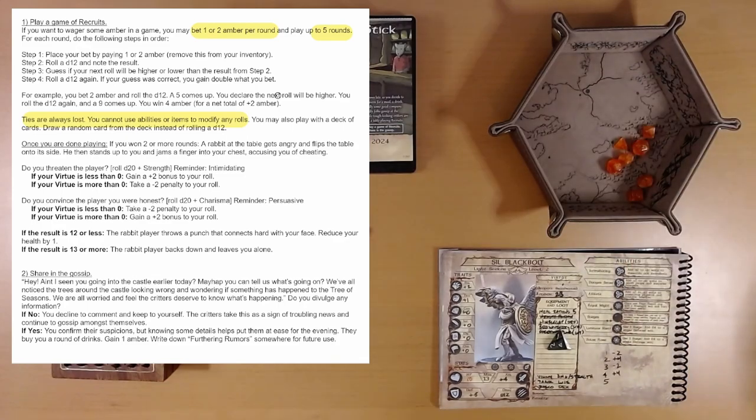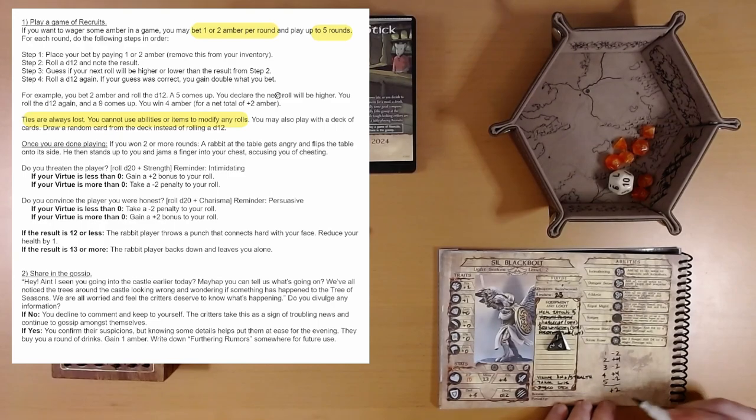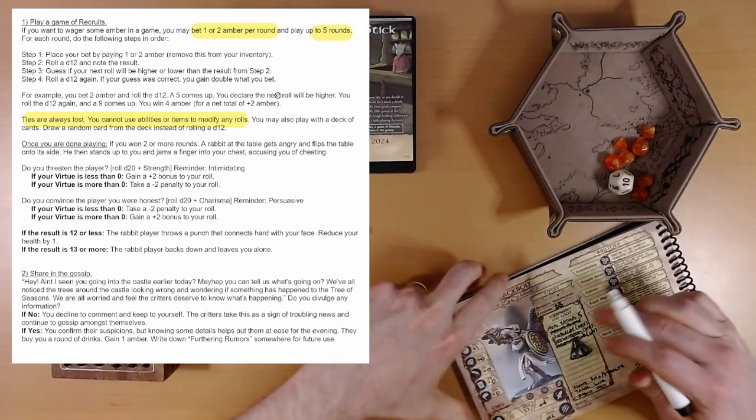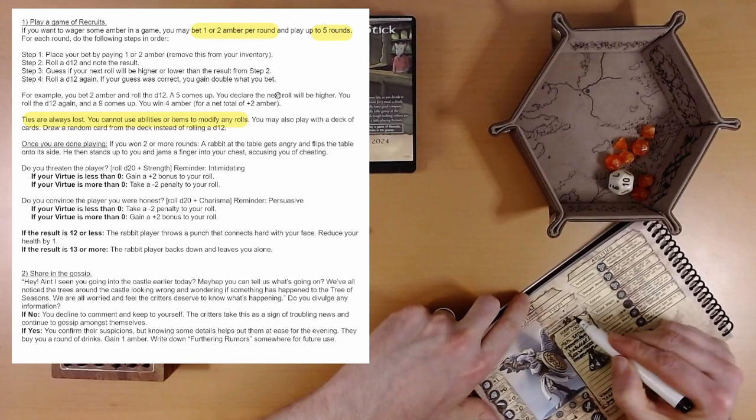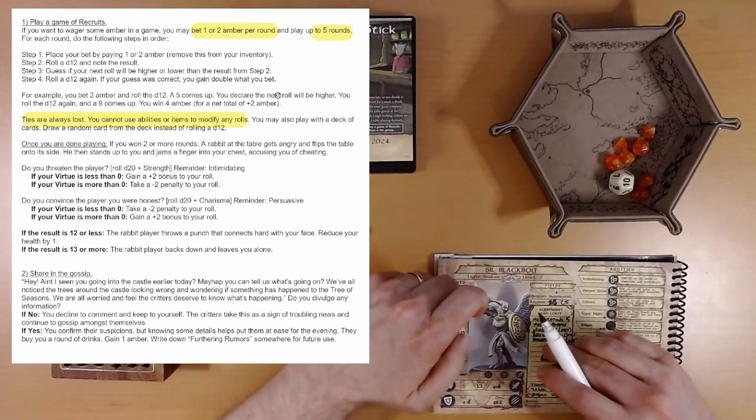So far we're up by four. So we'll wind up up no matter what happens this round. But let's see if we can get another two. Ten. I'm guessing it's gonna be lower. And it is not. It's a tie. So, okay. Six. Minus six plus eight. We wind up with plus two. Not terrible. So that brings us to twenty-five amber. Okay.